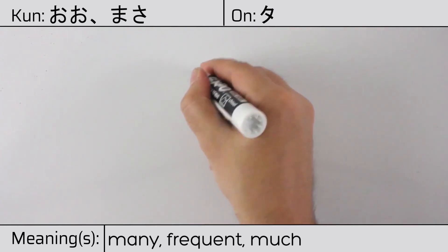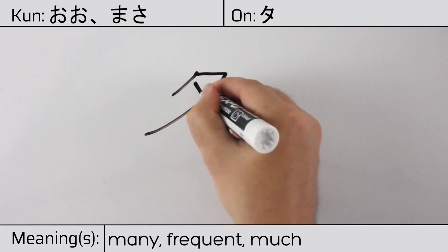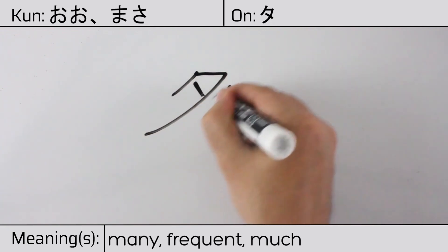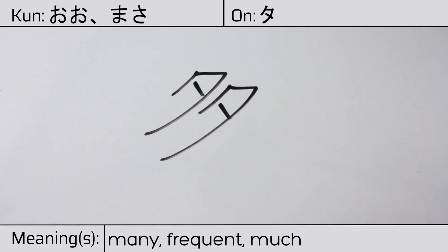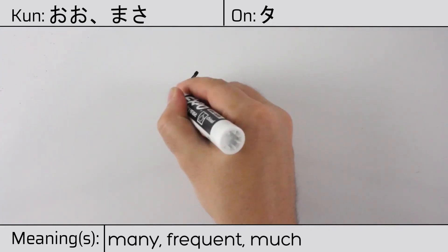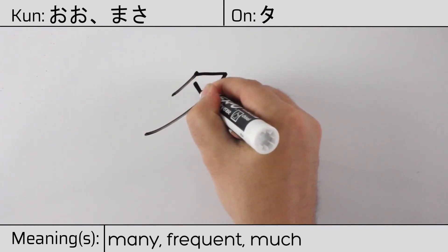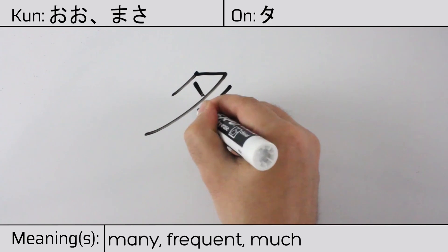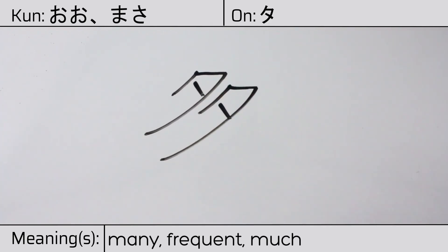Here is the stroke order. This character is made up of the following radicals or parts: evening, sunset. You can remember this kanji by the following hint: evening upon evening means many.